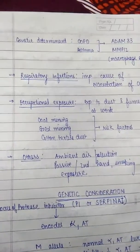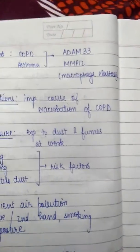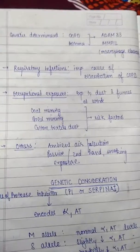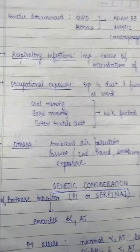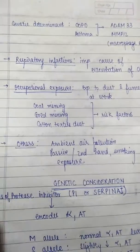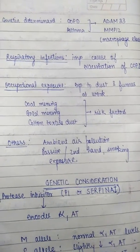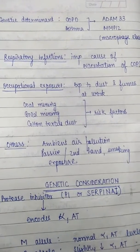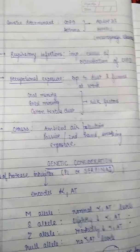Various genetic determinants exist in COPD and asthma, including the ADAM33 gene and macrophage elastase MMP-12. Respiratory infections are also an important cause of exacerbation of COPD. Occupational exposure to dust and fumes — such as in coal mining, gold mining, and cotton textile industries — are significant risk factors.